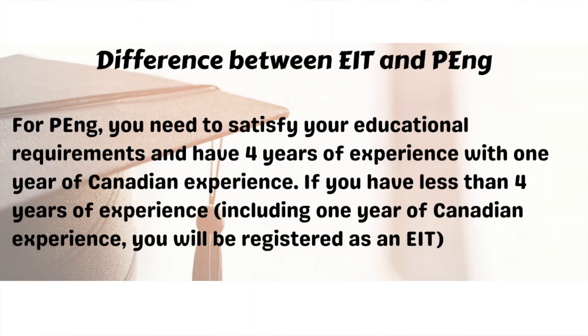Before moving ahead, let's discuss the difference between an EIT and a Professional Engineer. An EIT is a person who has enough education but less than four years of experience. To become a PE, you need at least four years of experience, with one year of that experience being in Canada. If you don't satisfy that condition, you will be considered an EIT and can apply for PE once you complete your experience.